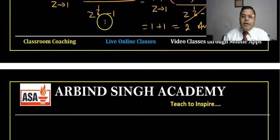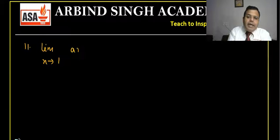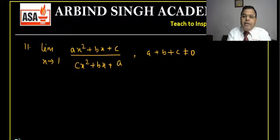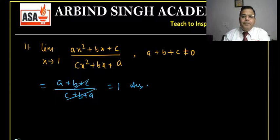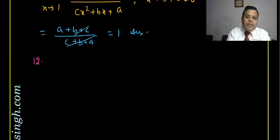Question 11: limit as x tends to 1 of (ax² + bx + c)/(cx² + bx + a), given that a + b + c ≠ 0. Substituting x = 1 gives (a + b + c)/(c + b + a). These are the same, so the result is 1. It's a simple question, but I'm solving it so everyone understands.